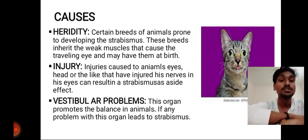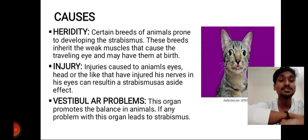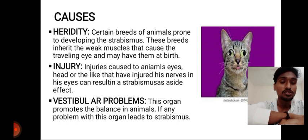Injury and vestibular problems are both called acquired causes. Injuries caused to animal eyes, head, or any organ near the eye that damages its nerves or eyes can result in Strabismus, including acid and many other effects. The vestibular organ promotes balance in animals and is also present in human beings. If there is any problem in this organ, it leads to Strabismus — the squint and cross-eye disorder.